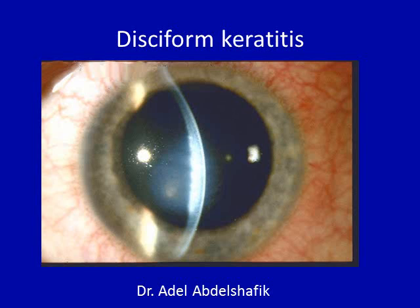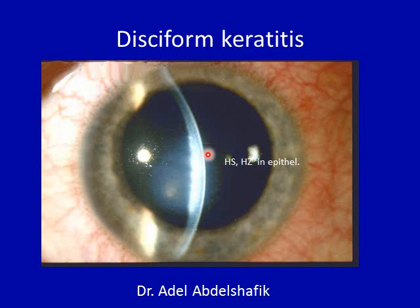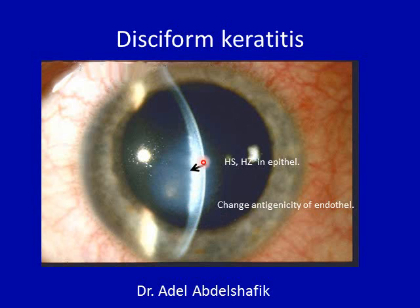The second form herpes can cause to the eye is an antigen-antibody reaction called disciform keratitis. It is an example of affection of the endothelium due to antigen-antibody reaction. We can see an area of haziness, and on a slit lamp the cornea is edematous. The herpes simplex or sometimes herpes zoster virus is in the epithelium, sending toxins to change the antigenicity of the endothelium, so an antigen-antibody reaction occurs and the endothelial function is lost, causing localized edema. As this is an antigen-antibody reaction, the treatment should be steroids.